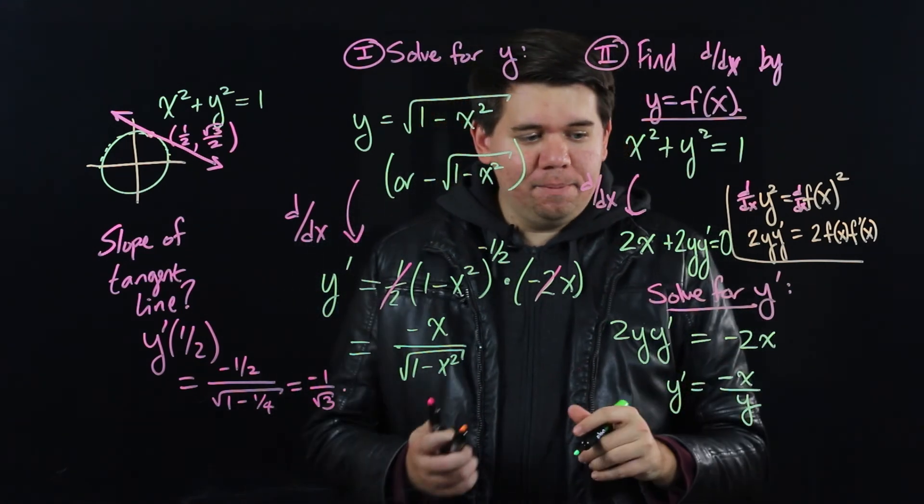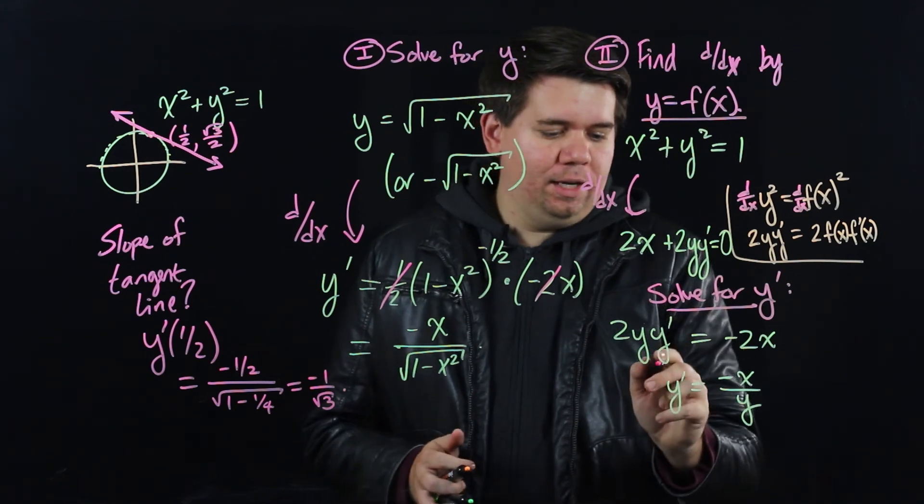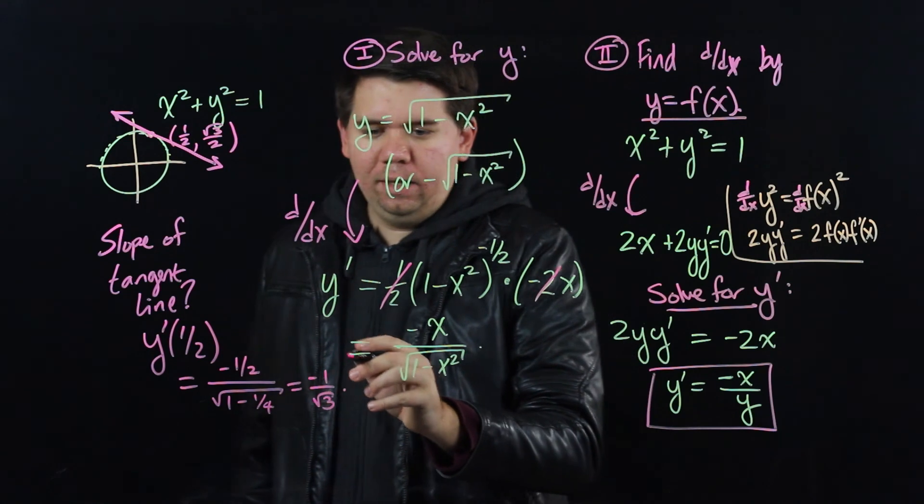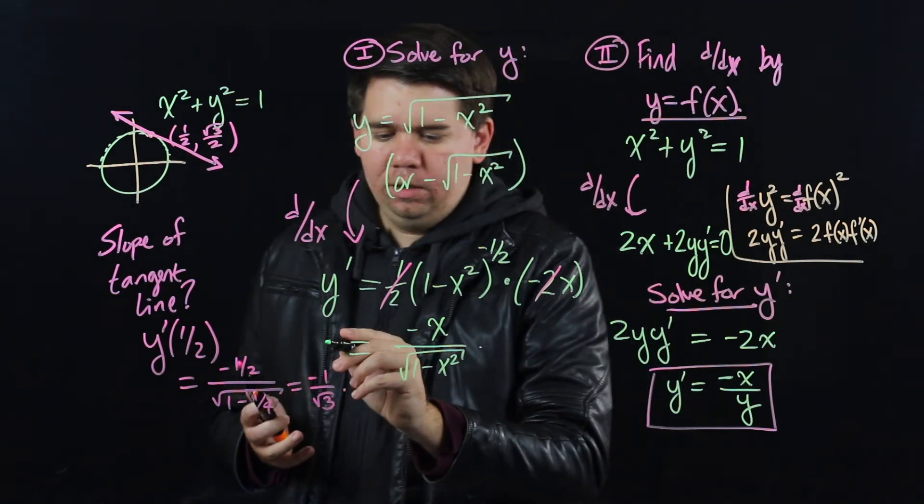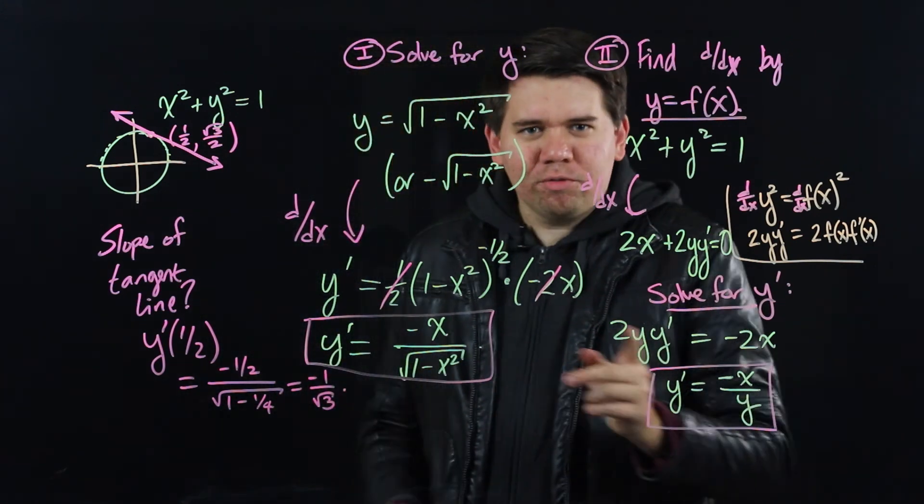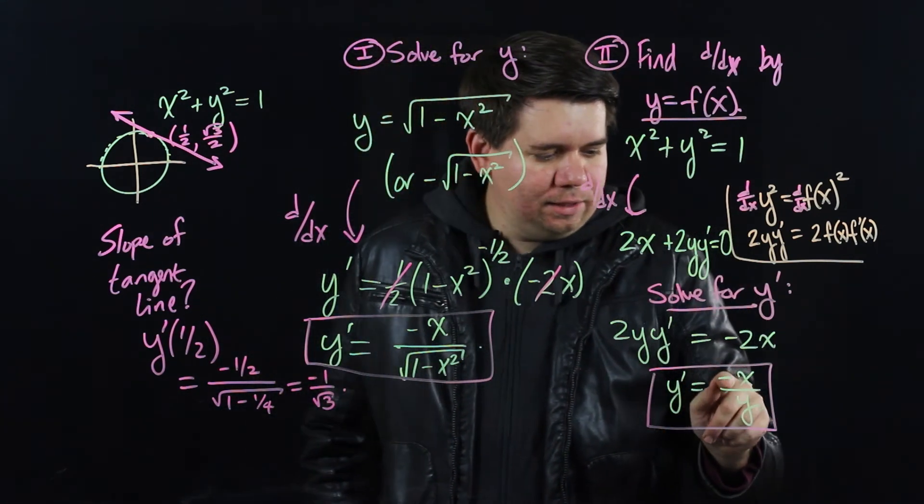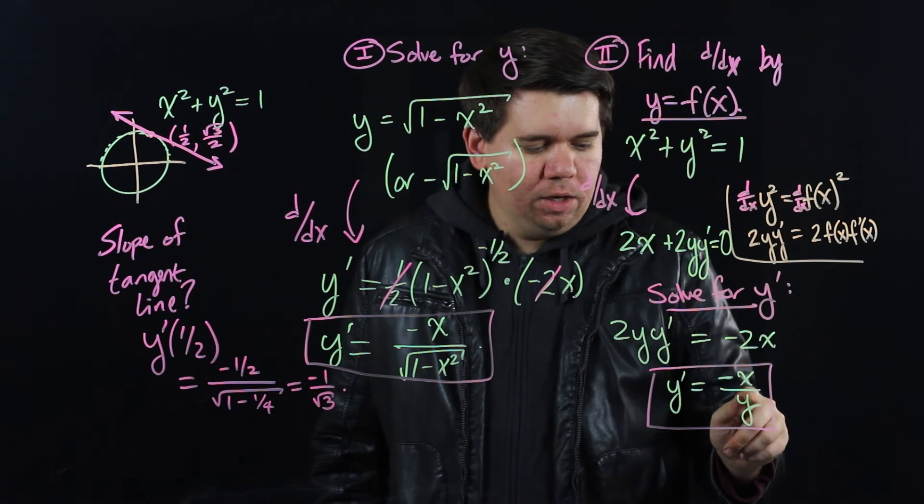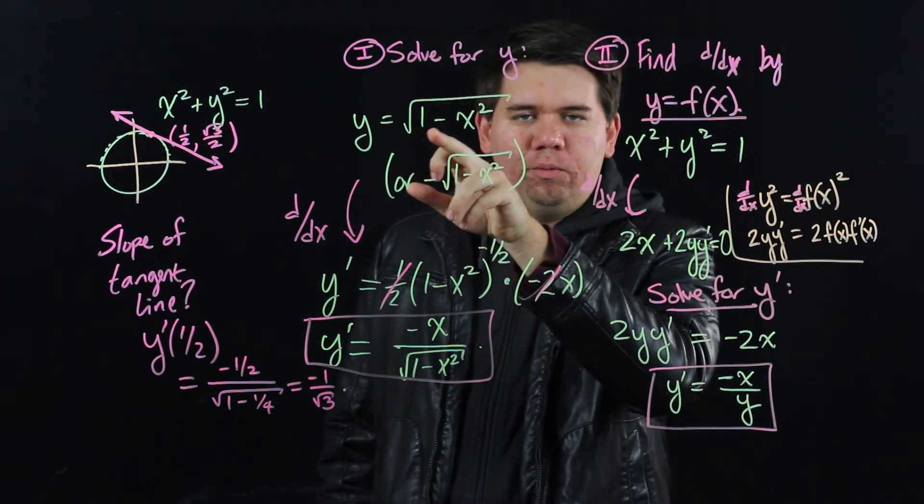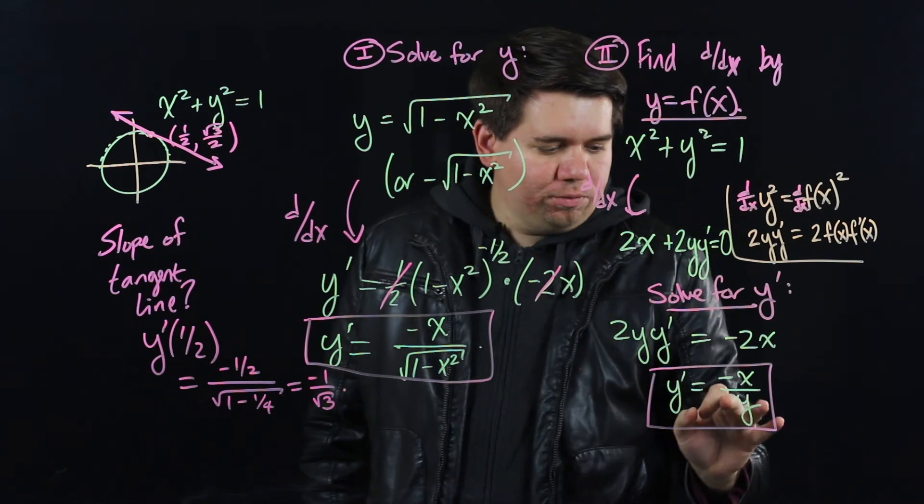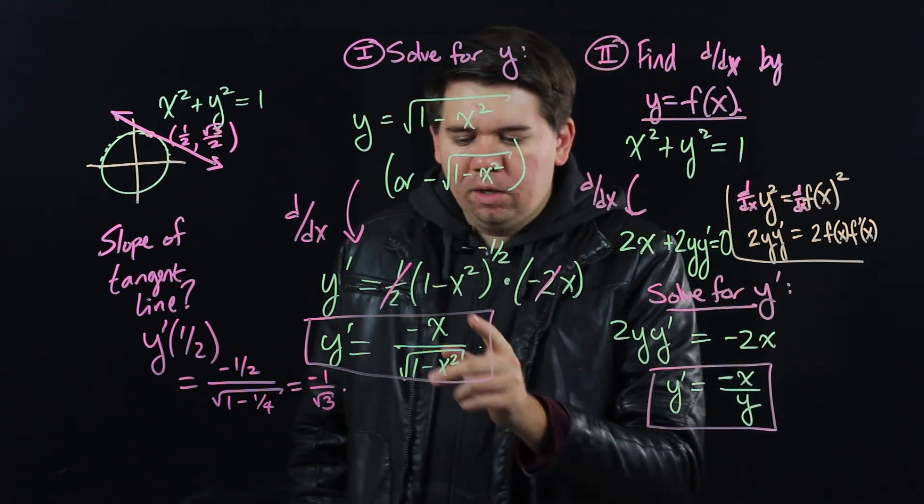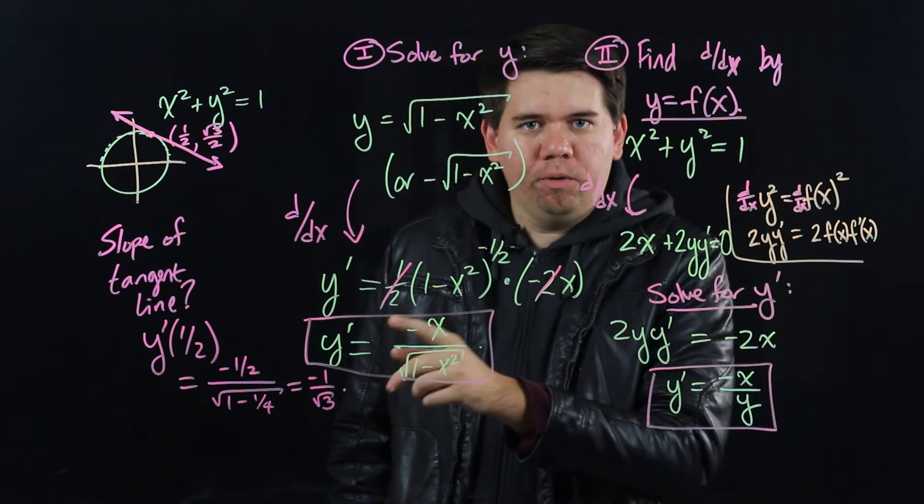Now you might look at that and be a little bit concerned. I mean, after all, it seems like I got a different thing for y prime here, than when I solved it over here to the left, using our typical approach. But is it really different? This just says it's negative x divided by y. What is y? Well, if you solve for y, we said it was the square root of 1 minus x squared. So this would really just be minus x over the square root of 1 minus x squared, which is exactly what we have before.